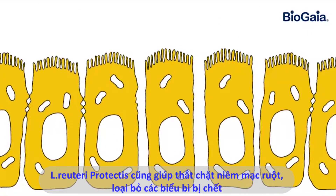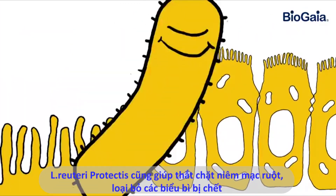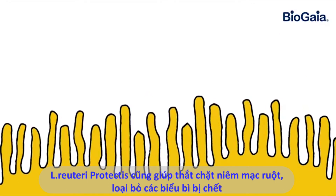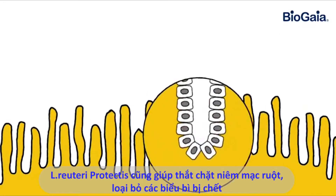Protectis also strengthens the intestinal mucosal layer by tightening the epithelial barrier and by replacing damaged epithelial cells.